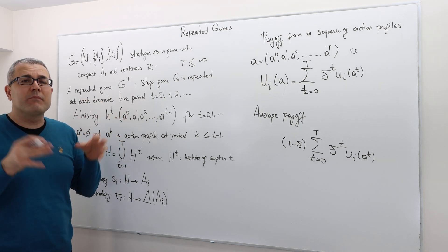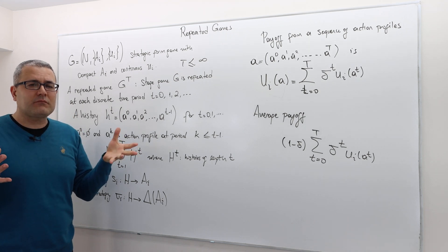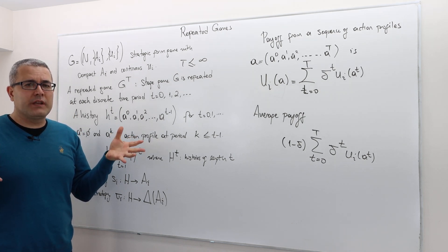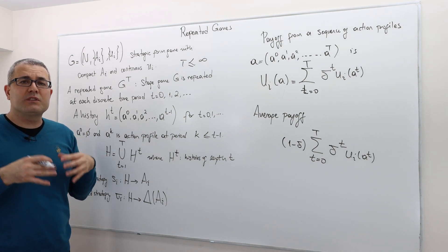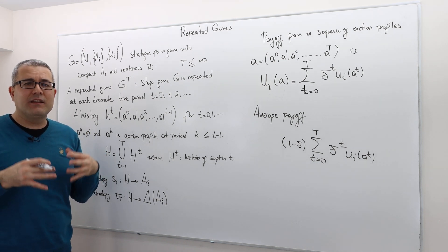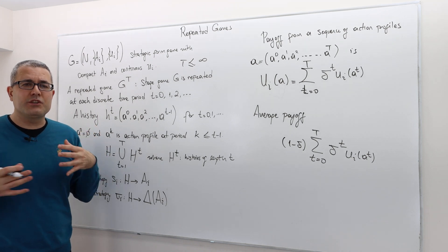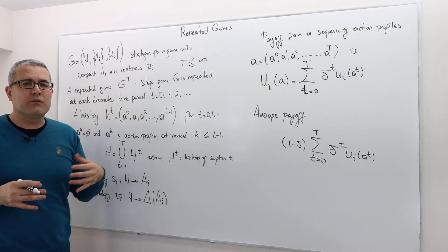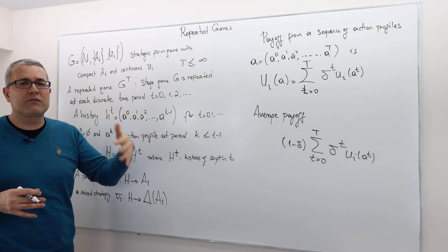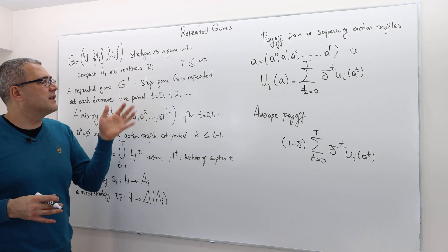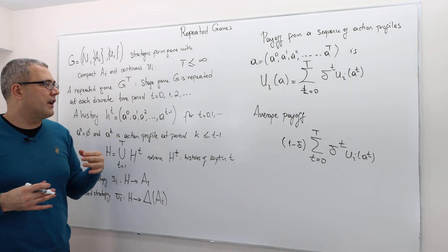At T equals zero, players simultaneously choose their actions from A_i, and then they learn each other's actions. In period one, they choose simultaneously and independently again, payoffs are realized, and they learn each other's actions. Then they play again at period T equals two, T equals three, up to T equals capital T. If T is infinite, that means there is no end to this game.